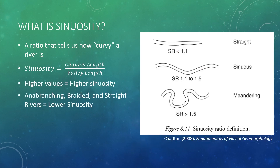A fantastic introductory textbook called Fundamentals of Fluvial Geomorphology by Roe Charlton has this diagram to explain the various states of sinuosity. In this, sinuosity less than 1.1 is considered straight, between 1.1 and 1.5 is considered sinuous, and greater than 1.5 is considered meandering.